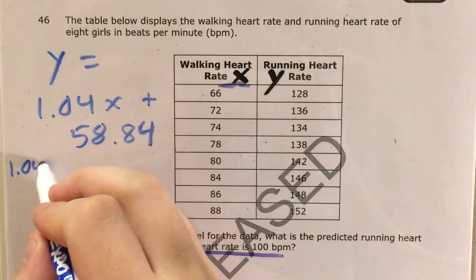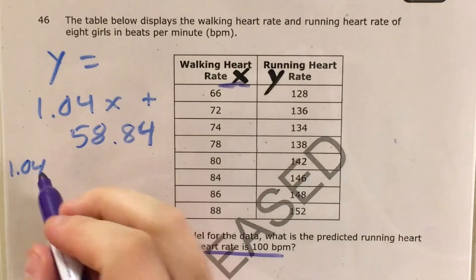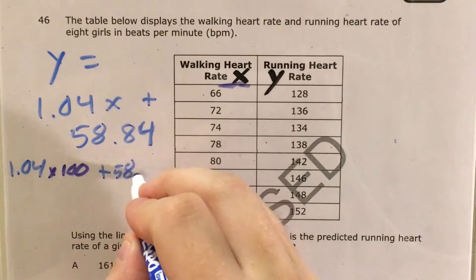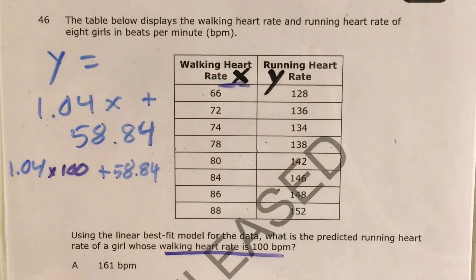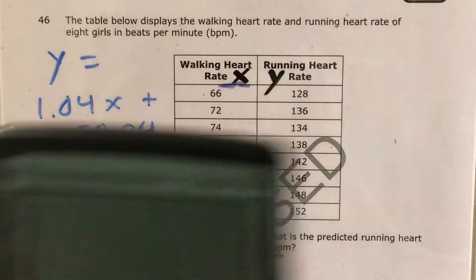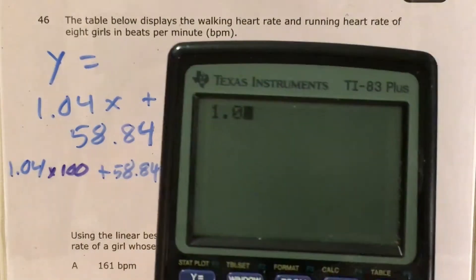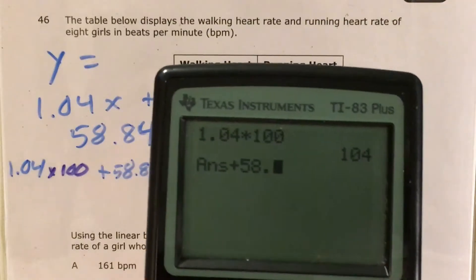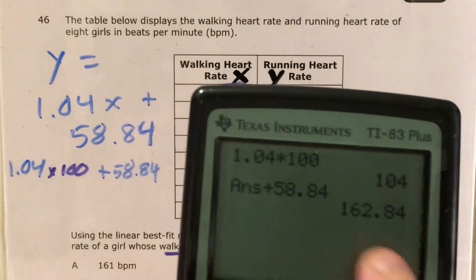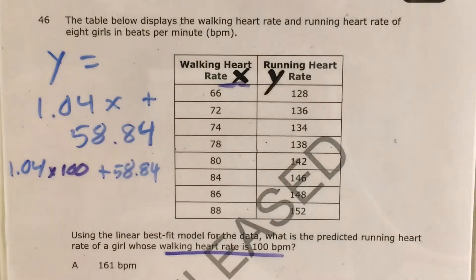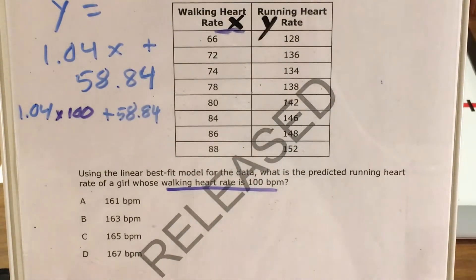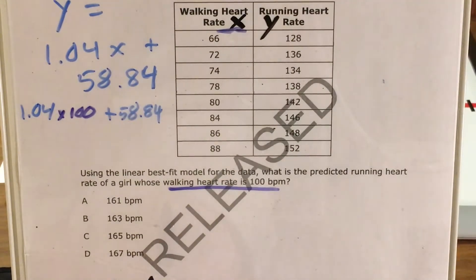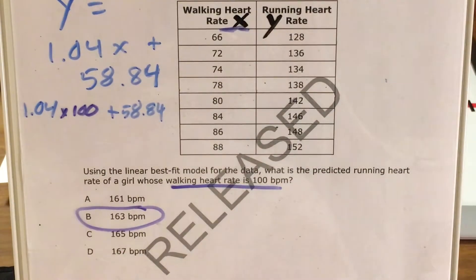So it will look like 1 and 4 hundredths times 100 plus 58 and 84 hundredths. 1 and 4 hundredths times 100 is just 104, plus 58 and 84 hundredths is 162 and 84 hundredths. Now comparing that answer to the answer choices, the number 163 is closest to the 162.84 that I got.